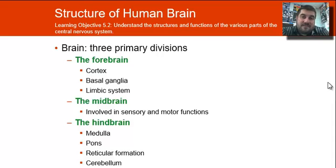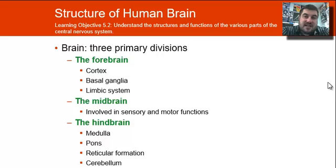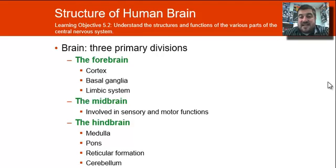The midbrain is involved in sensory and motor functions and relaying those up to other areas of the brain. The forebrain contains your cerebral cortex, your basal ganglia, and your limbic system. Let's go ahead and discuss these.